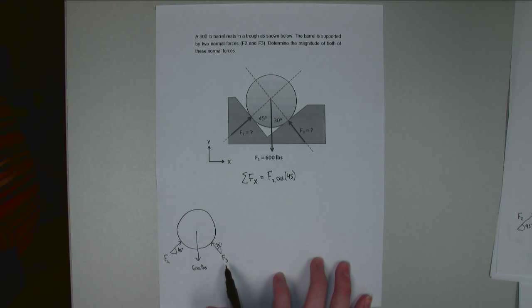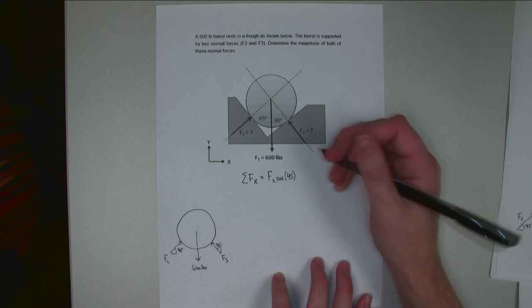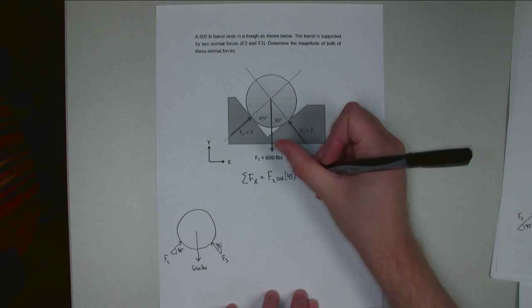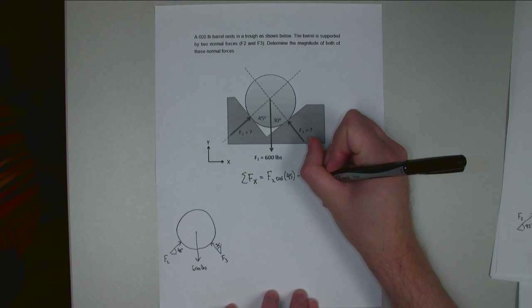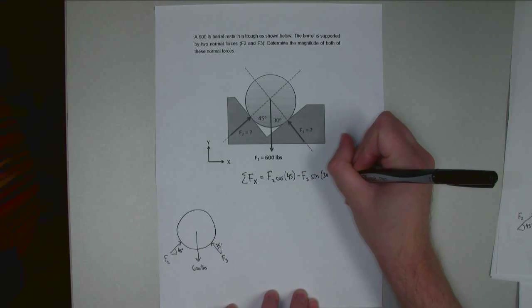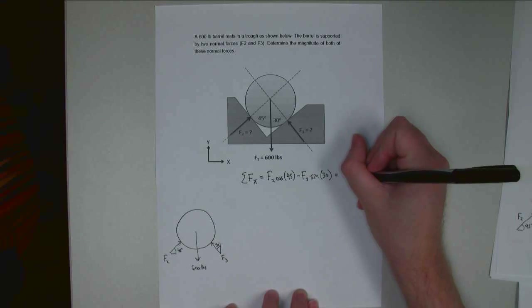F3, it's going to be F3 times the sine of 30 degrees, and this is negative because it's in the negative x direction there. So minus F3 times the sine of 30. And so the sum of forces in the x direction must be equal to zero.